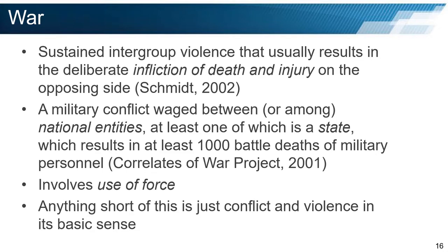War: There are a number of ways to define war in the modern sense. Schmidt in 2002 defined war as sustained intergroup violence that usually results in the deliberate infliction of death and injury on the opposing side. The Correlates of War Project in 2001 defined war as a military conflict waged between or among national entities, at least one of which is a state, which results in at least 1,000 battle deaths of military personnel. This latter definition seems highly specific — it is hard to say that if 999 people die it is not a war, but 1,000 die and it is. What we can say is that war involves the use of force. Anything short of this is just conflict and violence in its basic sense.